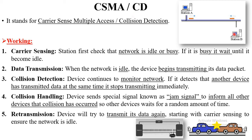Here in this diagram, station A wants to send information using that cable, and station B is also connected to that cable. The first step is carrier sensing — station A checks whether this channel is busy or not. This is called carrier sensing. If the channel is busy, station A goes to a waiting state. If the channel is free, it transmits the information. This is called data transmission.